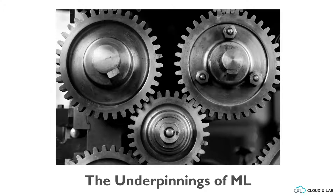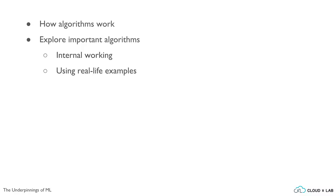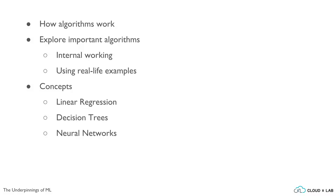Welcome to the chapter: The Underpinnings of ML. This chapter will go a little deeper into machine learning by focusing on how algorithms work. We will explore the important algorithms and their internal working in simple words, using real-life examples without any maths or coding. We will learn concepts like linear regression, decision trees, and neural networks.